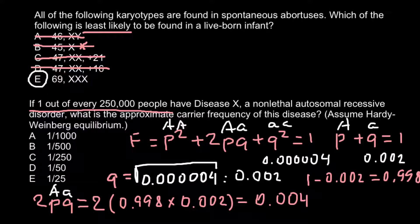I am rounding numbers to three decimal places. This number equals Answer C. If we divide 1 by 250, we get 0.004, so the correct answer is C.